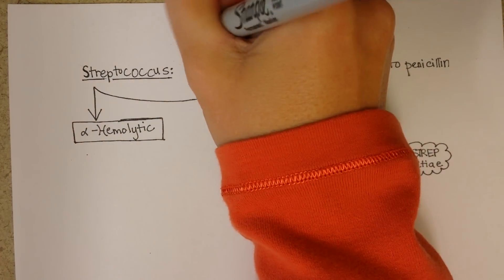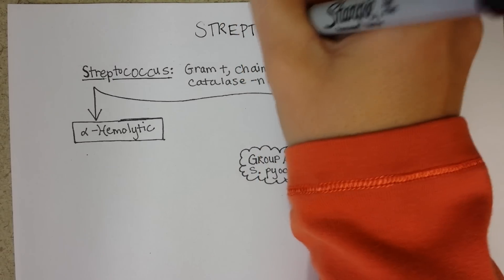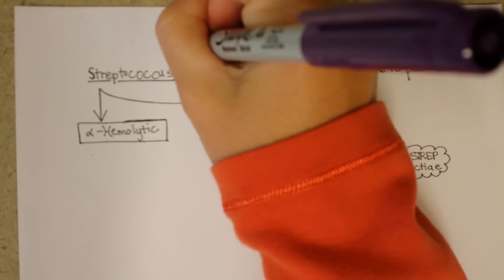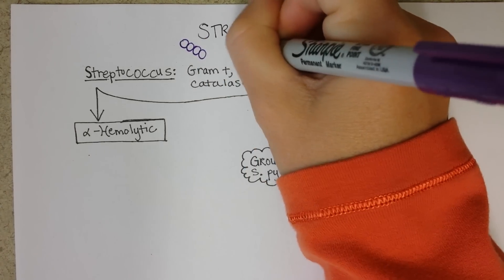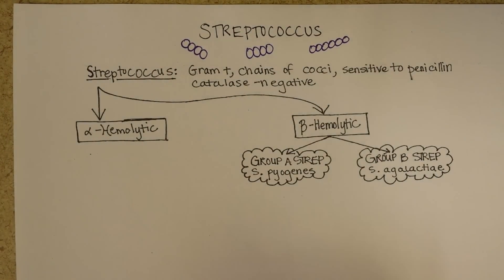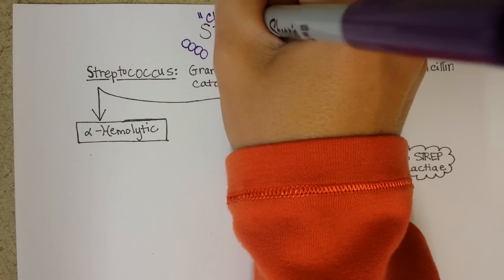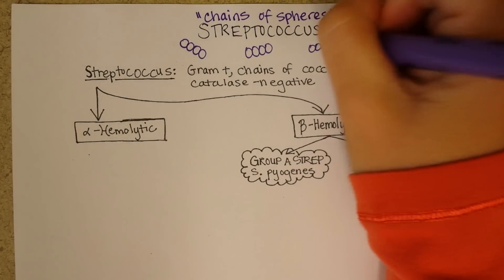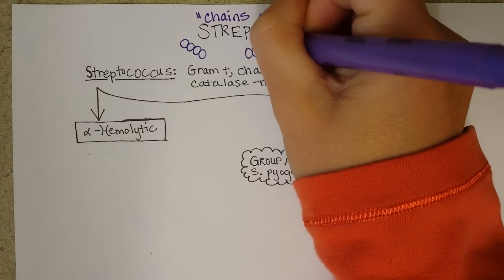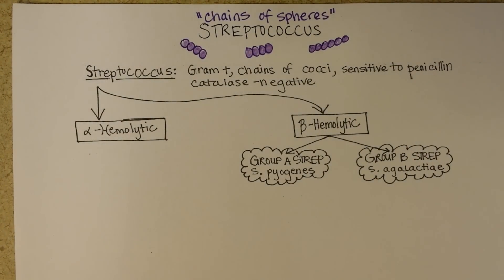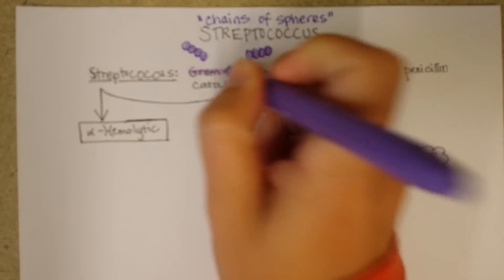This video is titled Streptococcus. Get a purple pen because Streptococcus is gram positive, and you'll notice I'm arranging it in chains — that is how it grows and what the name means. Strepto means chains and coccus means spheres, so it's chains of spheres. When you do a gram stain on these cells, they appear purple, confirming they are gram positive chains of cocci.